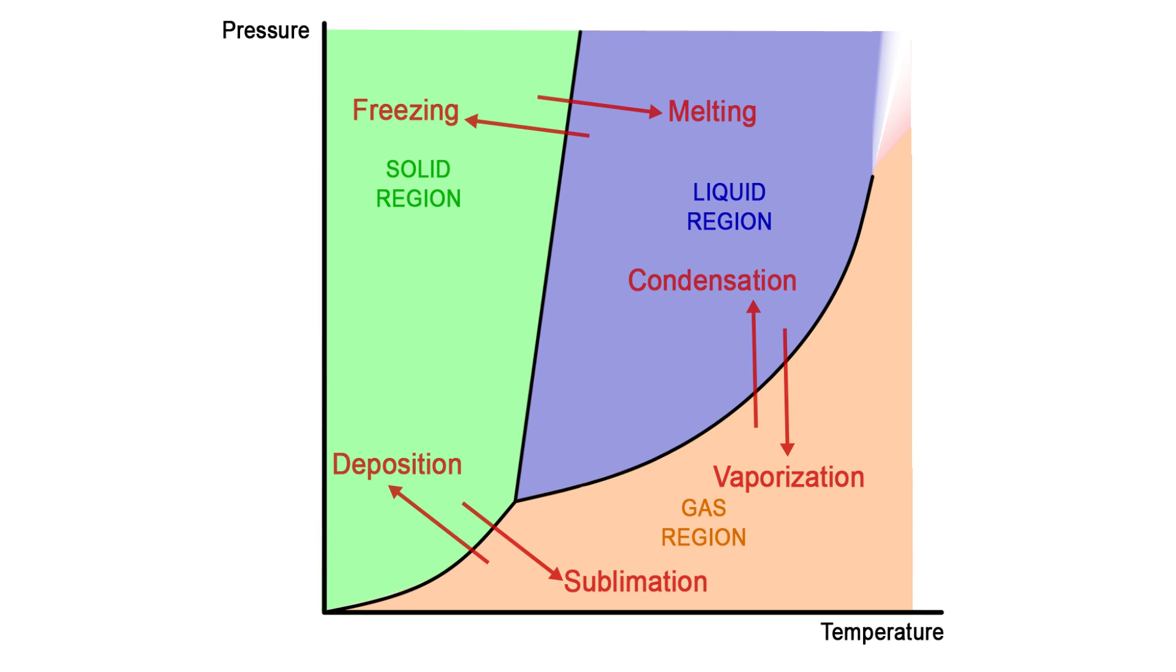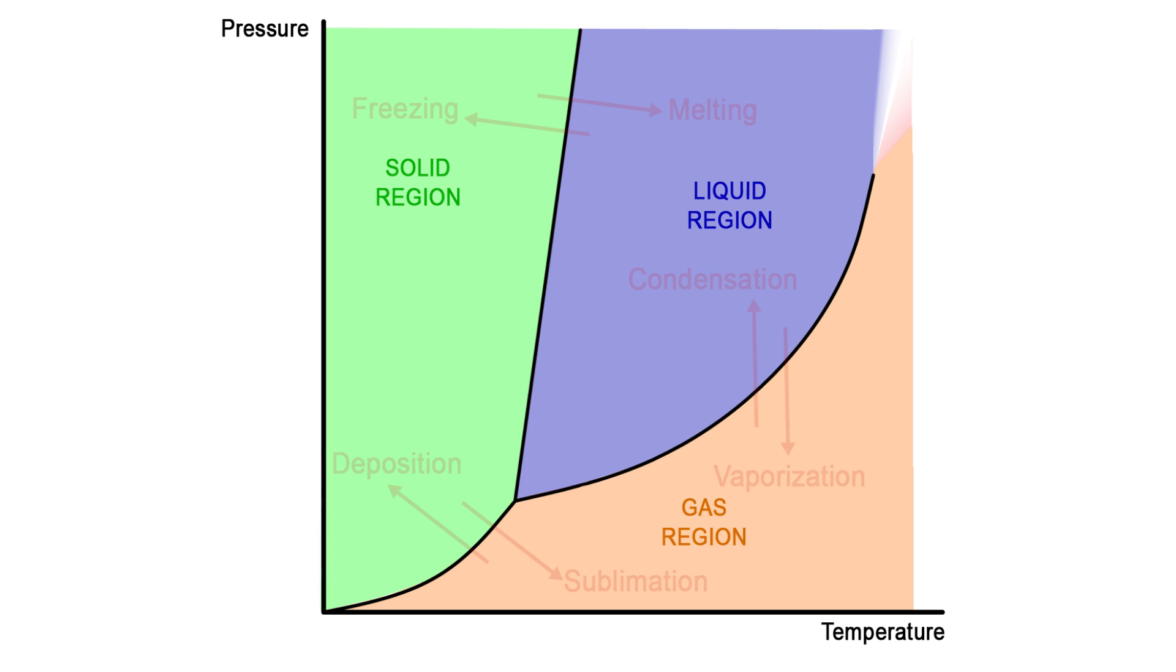The PT diagram shown is representative of most substances, but every particular substance would have its own distinct characteristics.